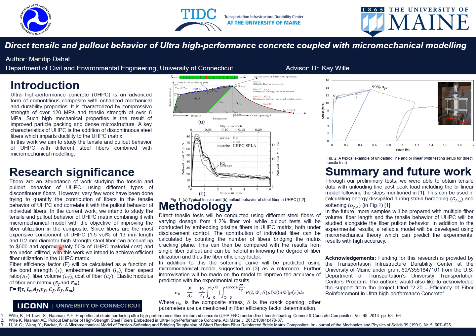In doing so, we will calculate a fiber efficiency factor as a function of bond strength, embedment length, fiber aspect ratio, fiber volume, cost of the fiber, and elastic modulus of fiber and the matrix. These are the typical tensile and pullout behavior of the UHPC as shown in figure 1.